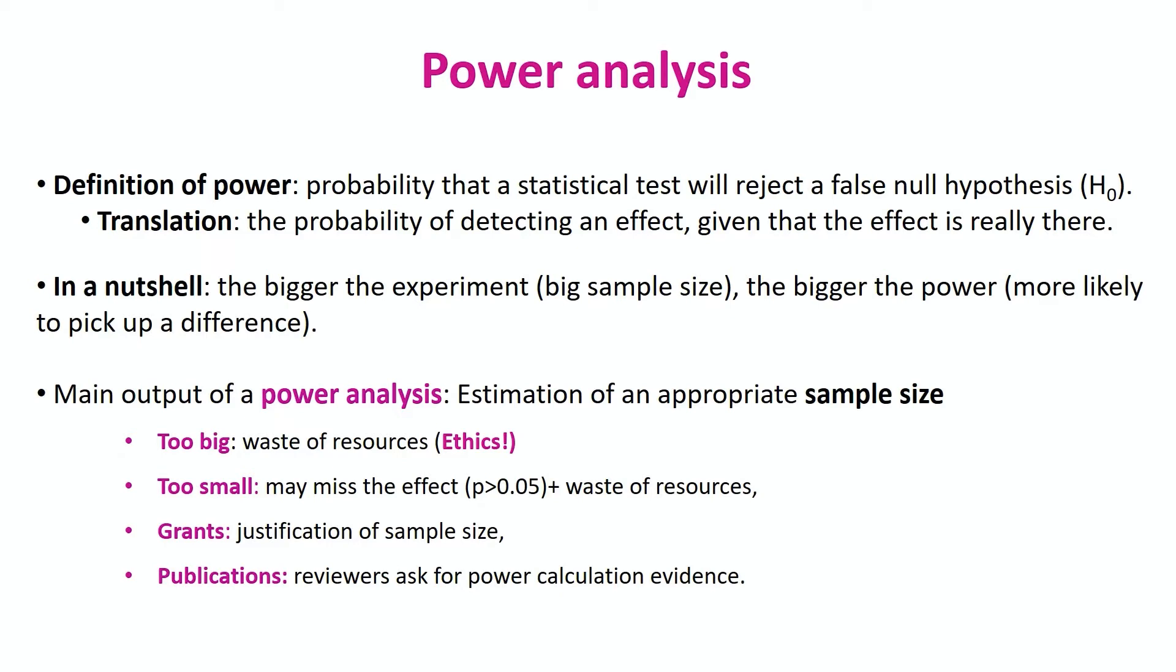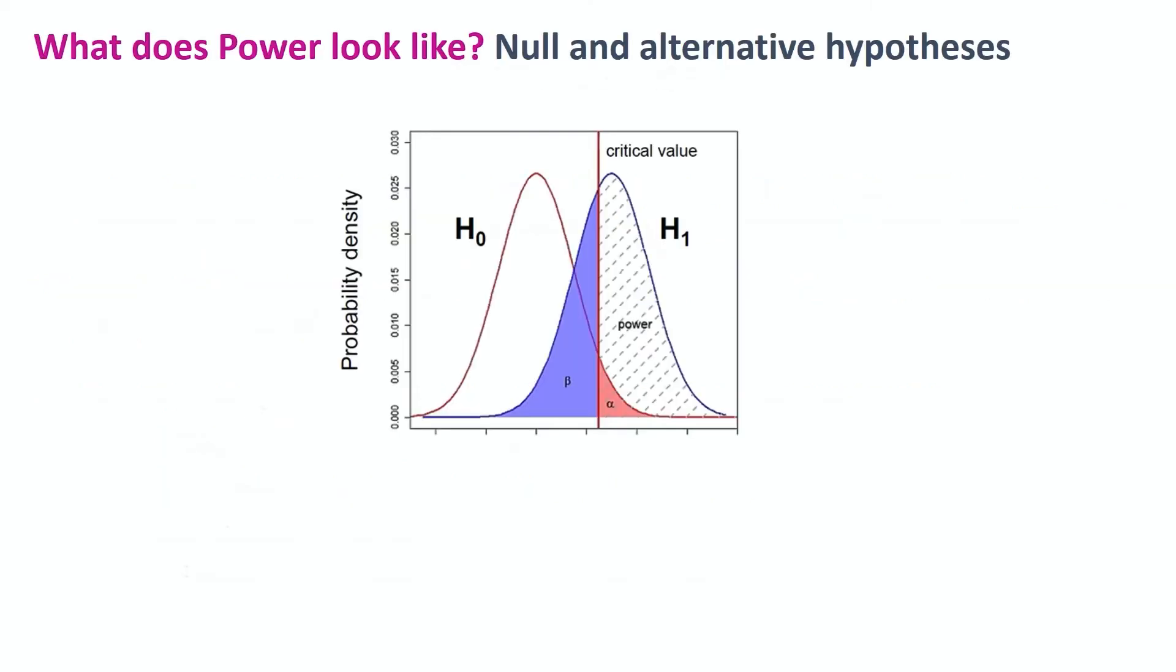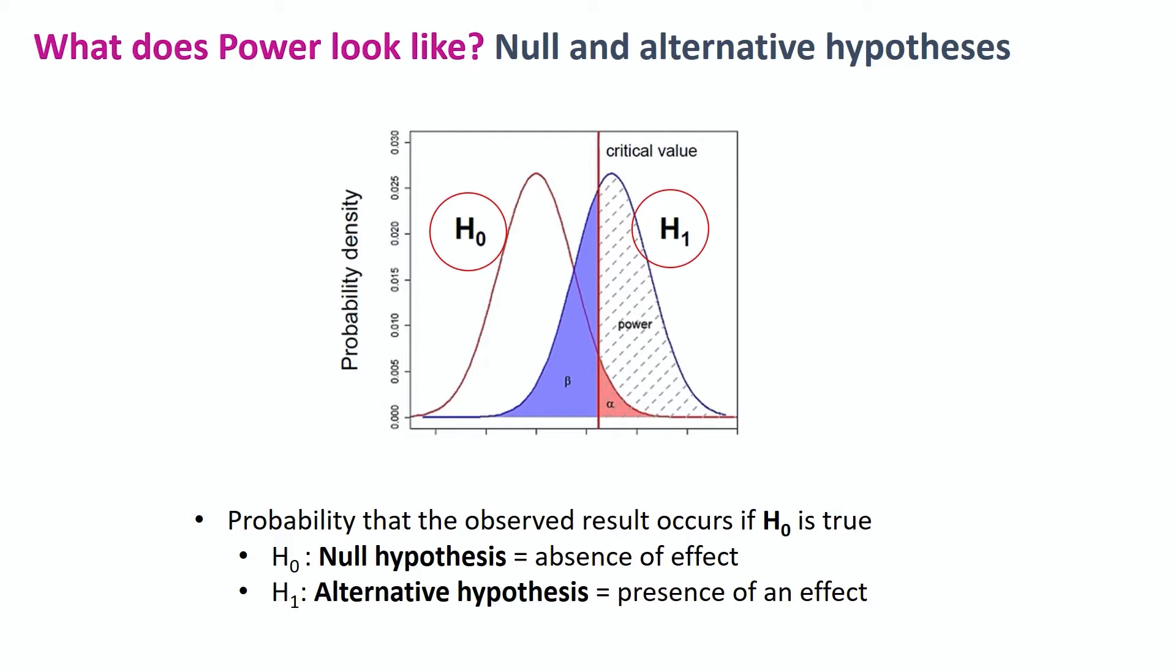Okay, so now, how does power look like? We can try this figure and go over its elements, starting with the null and alternative hypothesis. So here, we are thinking about the probability that an observed result occurs if the null is true. We have the null in red, that's the absence of an effect, and the alternative hypothesis in blue, corresponding to the presence of an effect.